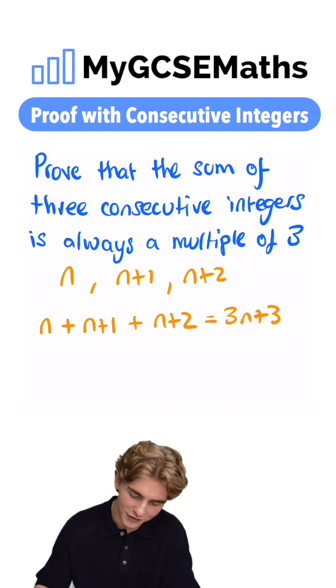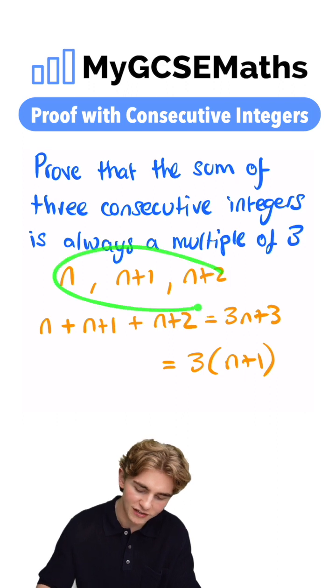Pulling out a factor of three, we can write this as three times by n plus one. That's going to show that the sum of three consecutive integers.